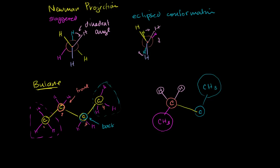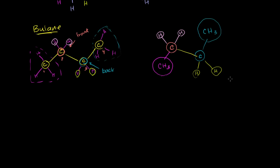Let me be very clear: this hydrogen and that hydrogen on carbon two, and this hydrogen and that hydrogen on carbon three. When you look at it this way, you can see how to draw the Newman projection — put carbon two in the front and carbon three in the back, treating the CH3 groups as single substituent groups. So let's do the Newman projection and think about which conformation is most stable.